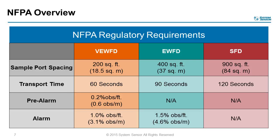Typically, the furthest ports away will have the longest transport time, but that time cannot exceed the limit for the detection category you have selected. All manufacturers have software that will support your design of piping networks to achieve these parameters. In the very early warning category, they also call out for a pre-alarm sensitivity and an alarm sensitivity at the sample ports. Early warning requires only an alarm, allowing one-and-a-half percent obscuration at the sample port. Standard fire doesn't have those requirements.